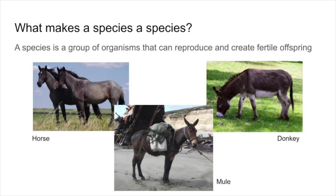So let's start off by talking about some very high level concepts. What makes a species a species? There are about 100 known species of Coffea. Generally speaking — and this is a contentious point — but what you may have heard in high school biology is that a species is a group of organisms that can reproduce and create fertile offspring.